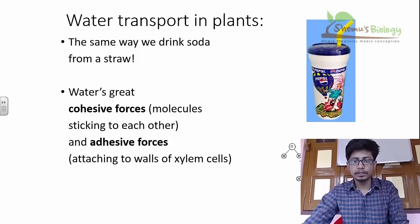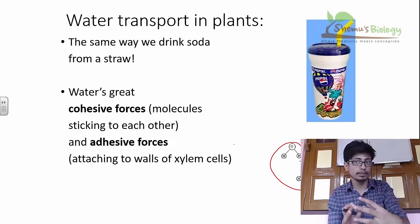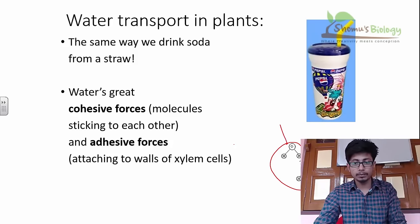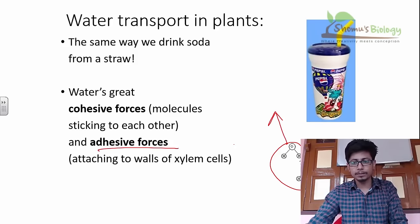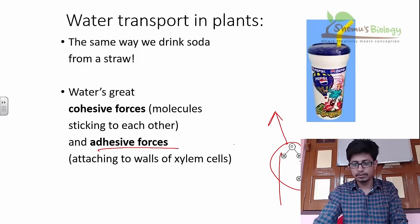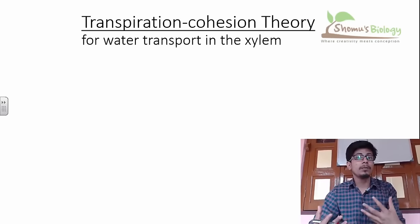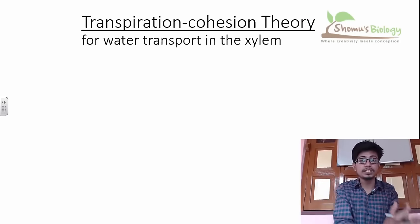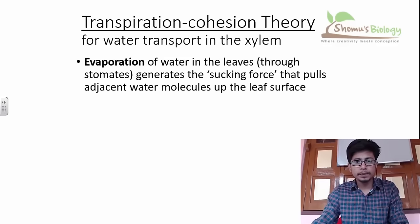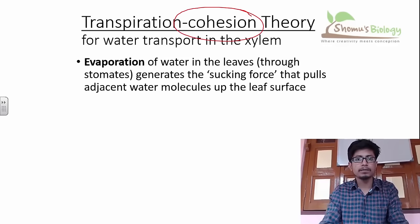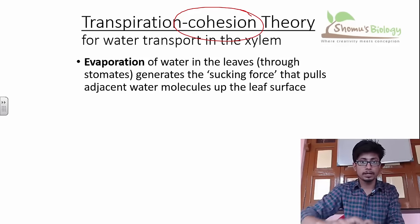Cohesive force is what holds water molecules together — if you drag one water molecule, the rest will completely be dragged along. Adhesive force means they tend to interact with the wall of the xylem. So we have a theory to explain how plants take up water. We call it the transpiration cohesion theory for the transport of water through xylem. Cohesion is one of the biggest forces involved, because water molecules are attached to one another.